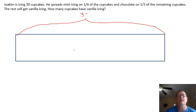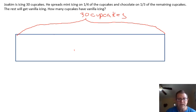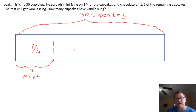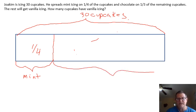We're going to start off with 30 cupcakes. It says she spreads mint icing on a quarter of them — there's one quarter, and that was mint, one quarter of all the cupcakes. Now it says chocolate on one-third of the remaining. What is the remaining? Well, if mint was one-quarter, I can see that this here is my remaining, and fractionally, if one-quarter was mint, three-fourths have to be the remaining.